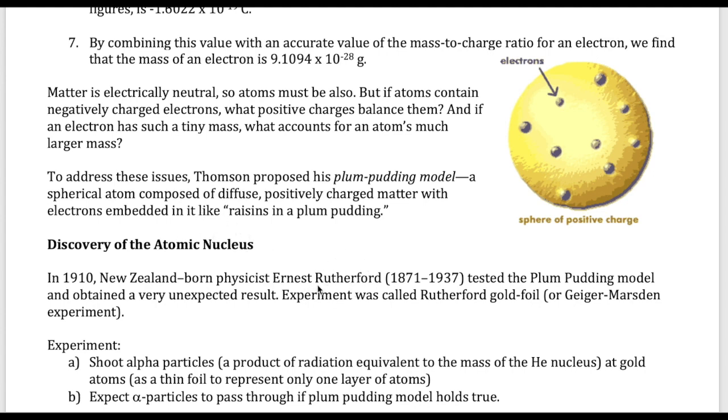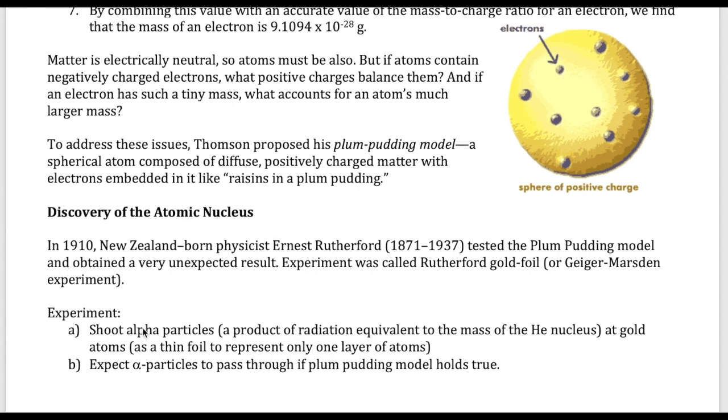Now, once Thomson proposed the plum pudding model, a person who was working with him at the time, which is Rutherford, decided to test it out. He wanted to know if this model is really correct or not. And he said that the way he can test it out is he can take a really heavy particle, which is called the alpha particle in this case, and he's going to shoot it on the surface of the atom.